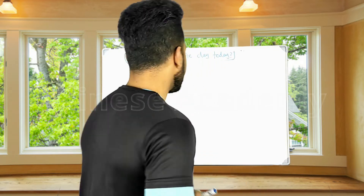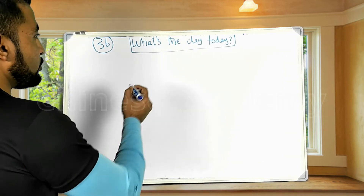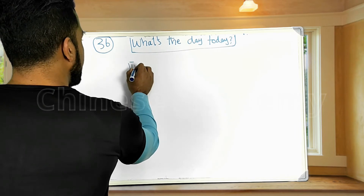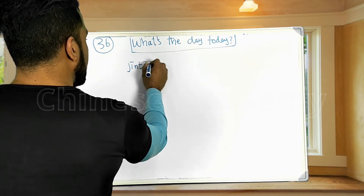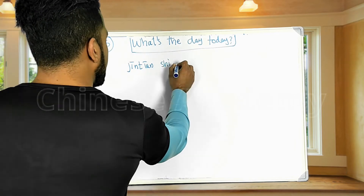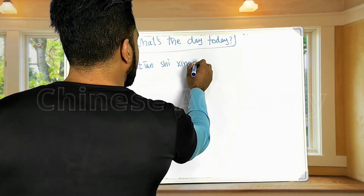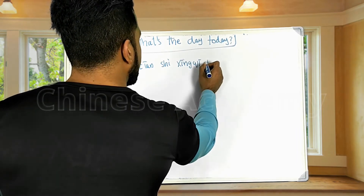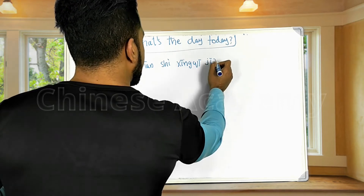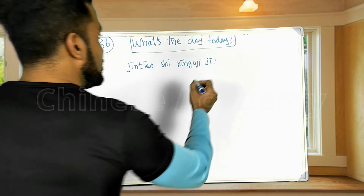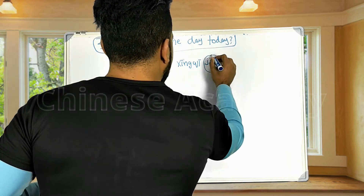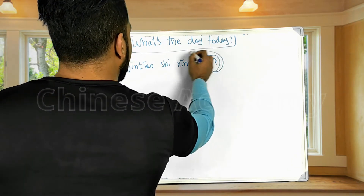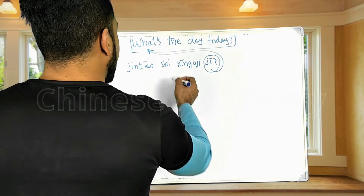In Chinese we can ask 今天是星期几 (Jīntiān shì xīngqī jǐ). This 几 (jǐ) is actually giving us the meaning of the word — you are asking someone what's the day today. So this 几 is giving us the meaning of these words: 今天是星期几.